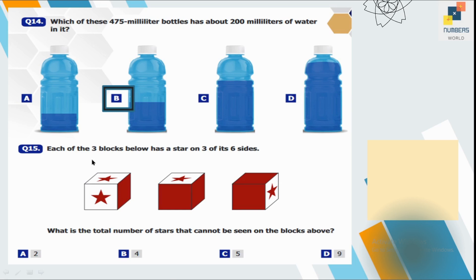Question number 15. Each of the three blocks below has a star on three of its six sides. What is the total number of stars that cannot be seen on the blocks above? So he told you very clearly that there are three blocks, three stars on each block. So one star is hidden on the first one. Two stars are hidden on the second one and two stars again hidden on the third one. So total is five. So C is our correct option.